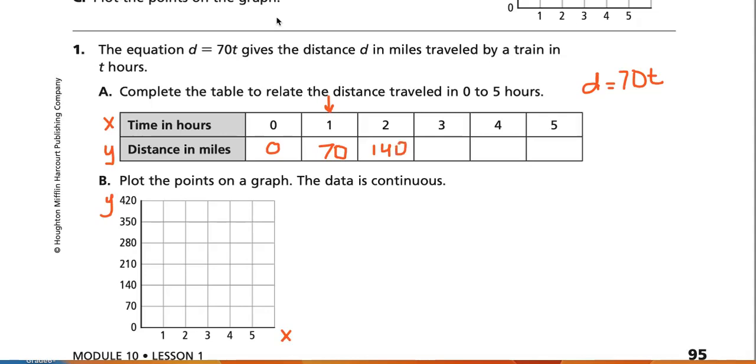And then I'd repeat that again, three times 70, which is 210. And four times 70 is 280.